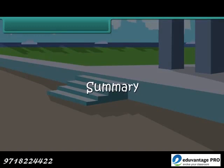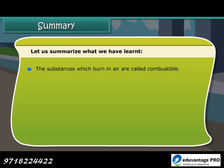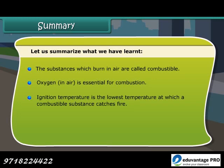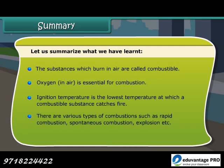Summary: The substances which burn in air are called combustible. Oxygen in air is essential for combustion. Ignition temperature is the lowest temperature at which a combustible substance catches fire. There are various types of combustion such as rapid combustion, spontaneous combustion, explosion, etc.